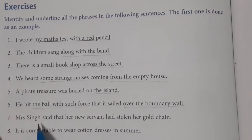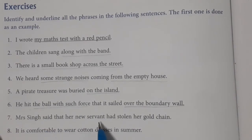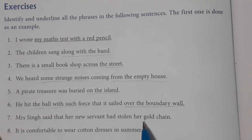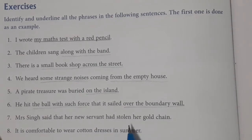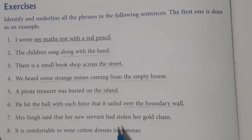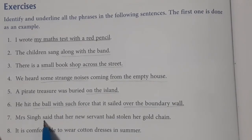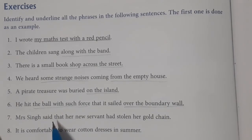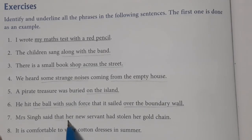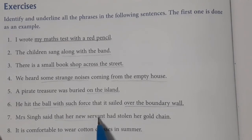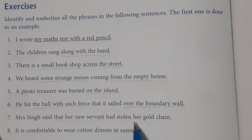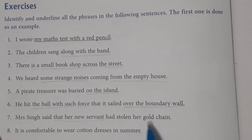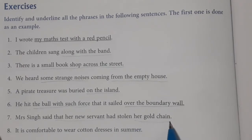The seventh sentence is: 'Mrs. Singh said that her new servant had stolen her gold chain.' Here, 'that her new servant' is our first phrase. Then 'had stolen' is the verb, and 'her gold chain' is the second phrase in this sentence.